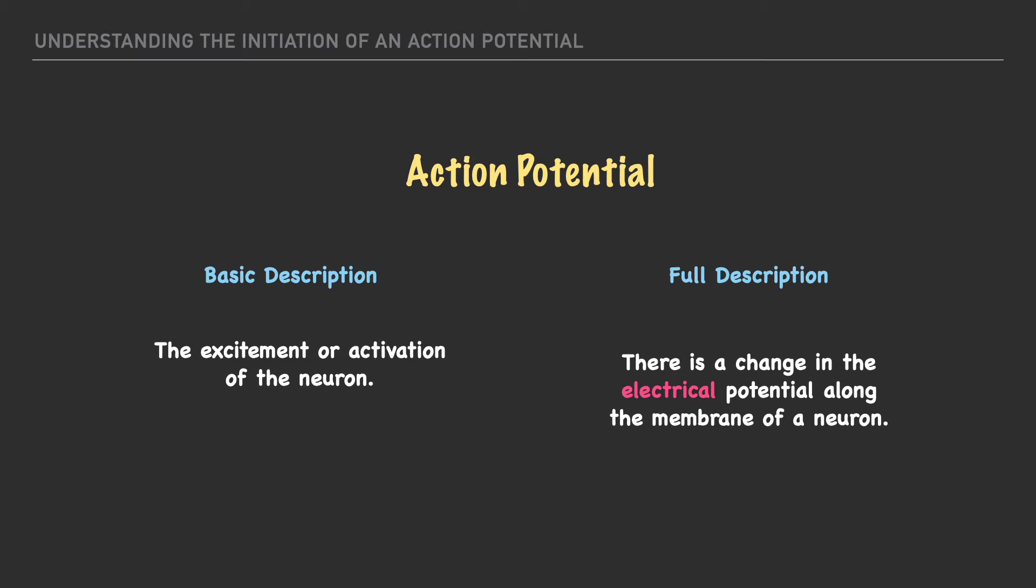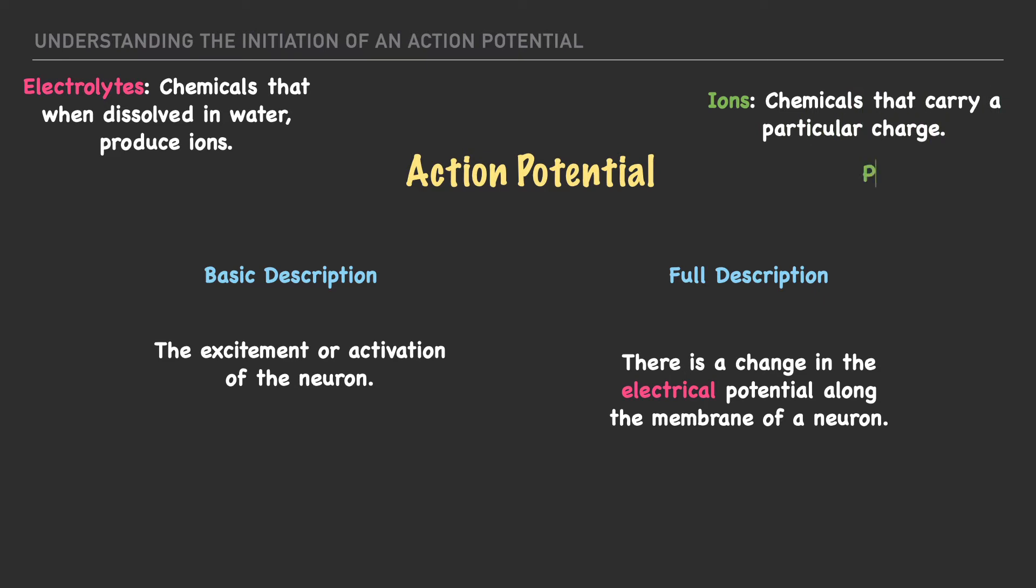Electrolytes are chemicals that when dissolved in water or when dissolved within a cell produce ions and ions are chemicals that carry a charge and these charges can either be positive called a cation or negative called an anion.